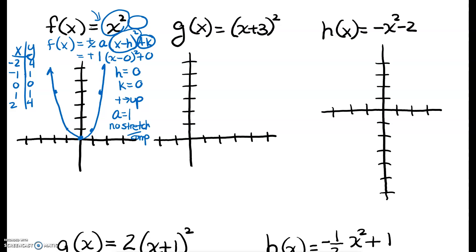There is no stretch or compress. So where's the line of symmetry? My vertex is at (0, 0), and if we split the graph in half right down the middle, that's the line of symmetry. That line has the equation x equals h, and in this case h equals 0.